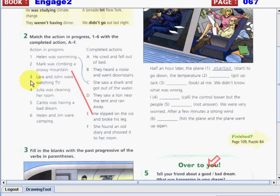What about number 3? Laura and John were watching TV. So what's the answer? What about number 4? Julia was cleaning her room. So what's the answer? So she found an old diary and showed it to her mom.